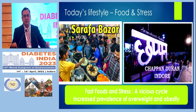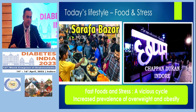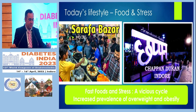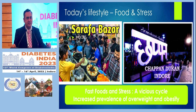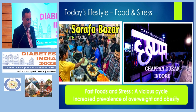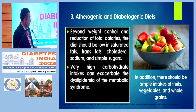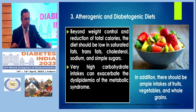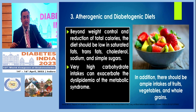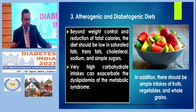What about food? The bitter reality is that fast food and stress create a vicious cycle increasing the prevalence of overweight and obesity. We want to reduce atherogenic and diabetogenic diet. Beyond weight control, the diet should be reduced by 500 to 1000 calories daily. It should be low in saturated fats, trans fats, cholesterol, low in sodium, and very low in simple sugars. Very high carbohydrate and simple sugar intake can exacerbate dyslipidemia.